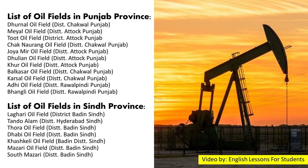Oil fields in Punjab include: Dhirnal oil field, District Chakwal; Miyal oil field, District Attock; Toot oil field, District Attock; Chak Naurang oil field, District Chakwal; Joyamir oil field, District Attock; Dhulia oil field, District Attock; Khur oil field, District Attock; Balkassar oil field, District Chakwal; and Karsaal oil field, District Chakwal. In Sindh province, the oil fields include: Lagari oil field, District Badin; Tandu Alam, District Hyderabad; Thora oil field, District Badin; Dhabi oil field, District Badin; Khashkeli oil field, District Badin; Mazari oil field, District Badin; and South Mazari, District Badin.